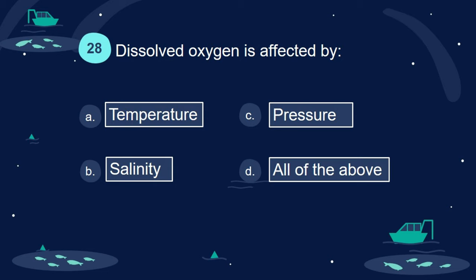Question 28. Dissolved oxygen is affected by: A. Temperature. B. Salinity. C. Pressure. D. All of the above.